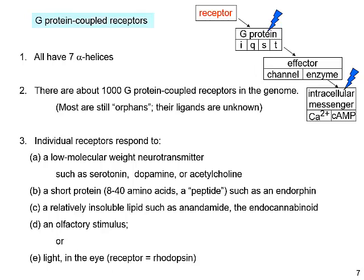Some generalizations about G-protein-coupled receptors: they all have seven alpha helices going through the membrane. There are about 1,000 G-protein-coupled receptors in the genome. Most of them are orphans — their ligands are unknown. Most of them are, in fact, olfactory receptors. In humans, many of the olfactory receptors have mutated to become non-functional, whereas in dogs, rats, and other mammals, they are quite functional.